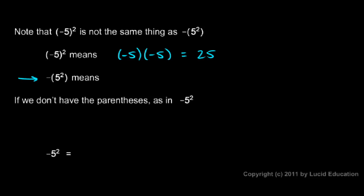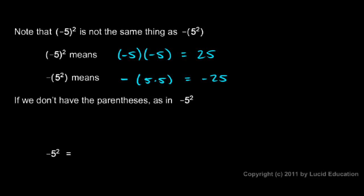Negative 5 squared — this next case — means negative 5 times 5. The 5 is squared in the parentheses, and then the negative sign is attached to that. So this is negative 25. You see they're not the same thing: one was positive 25, one was negative 25.